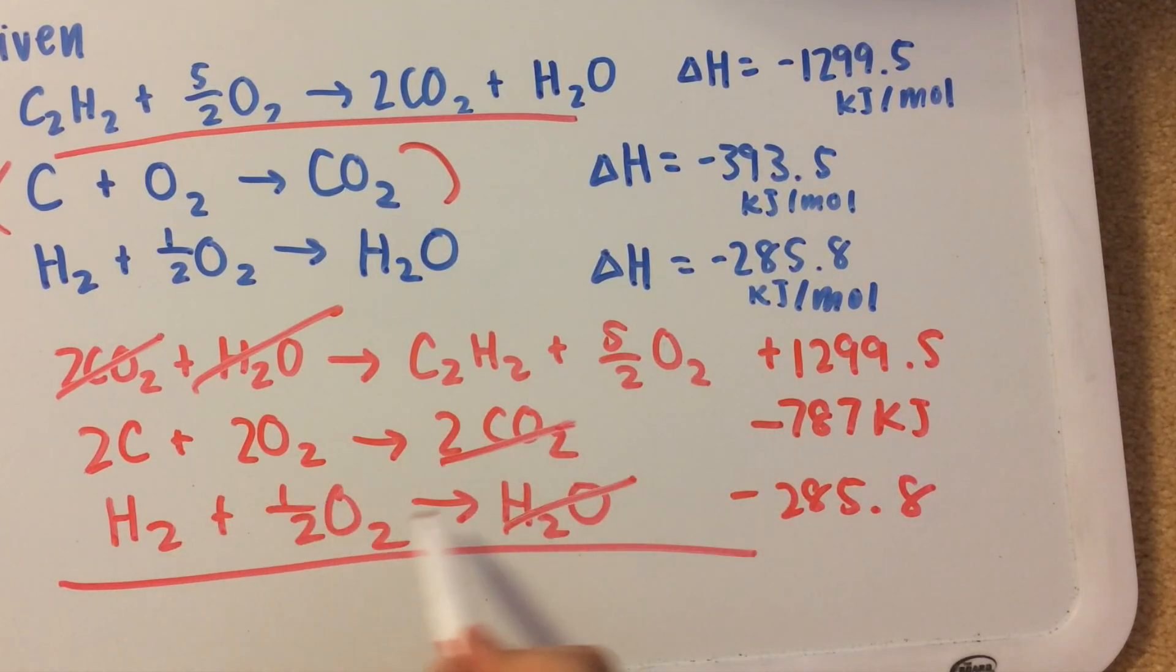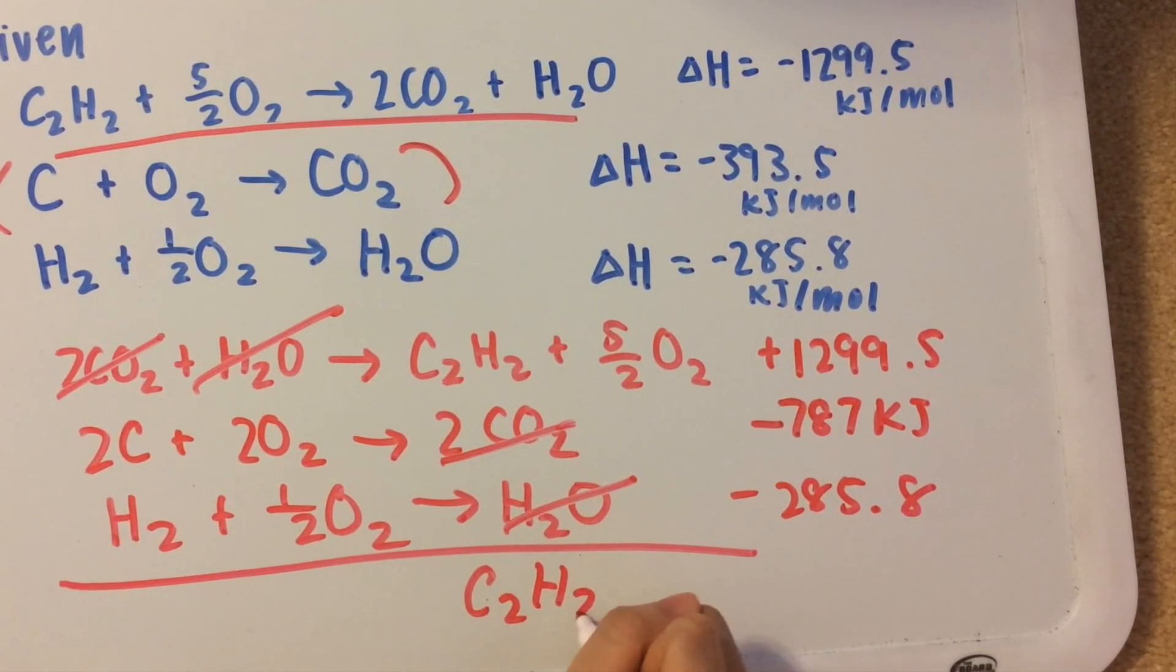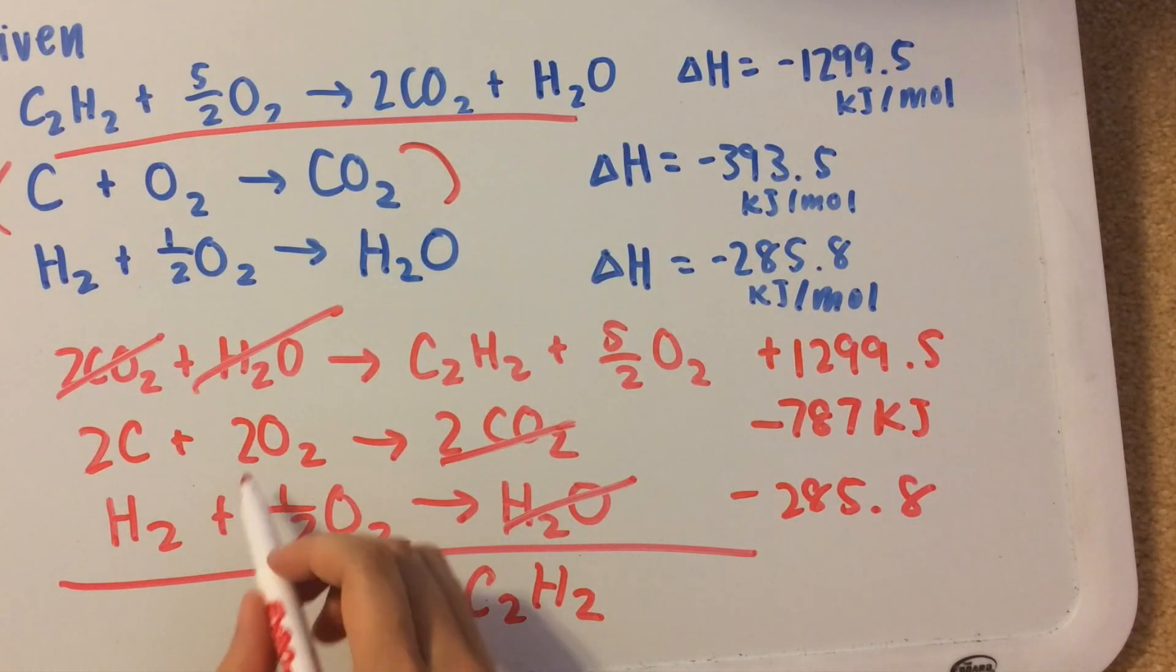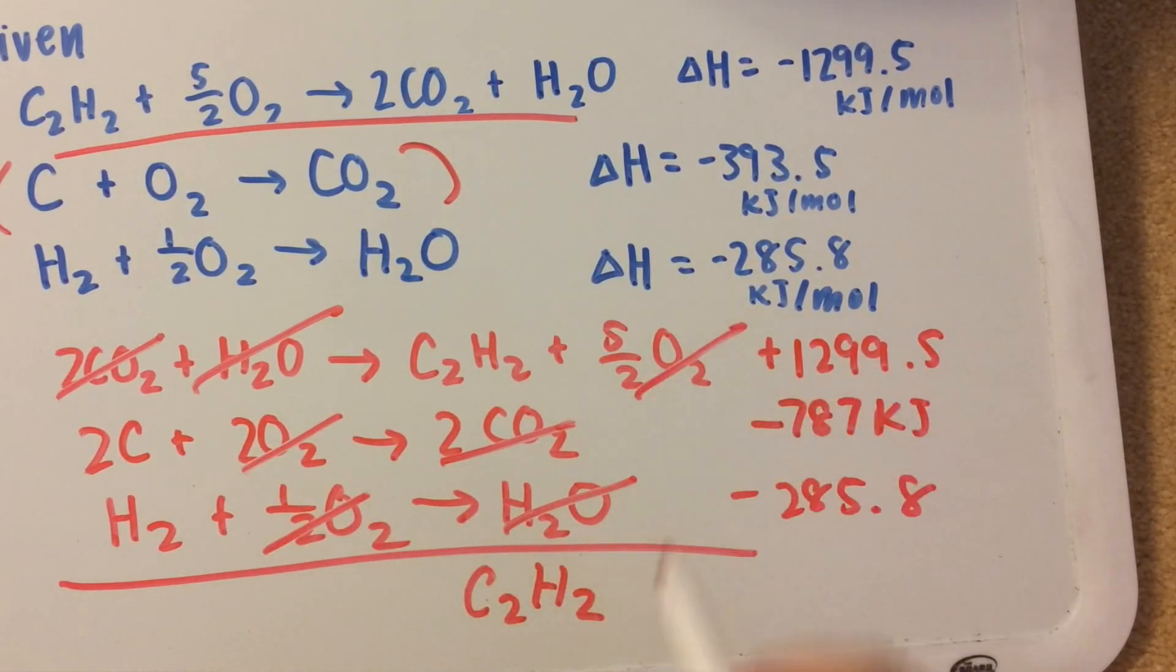C2H2, I don't see any more. So we're just going to leave that on the right side of the equation. Then we have 5 halves O2. Now, I see O2 over here and O2 over here. When we add 2 and 1 half, that's going to leave us with 5 halves. So all of these oxygens cancel out.